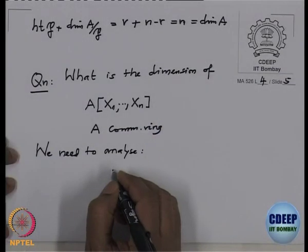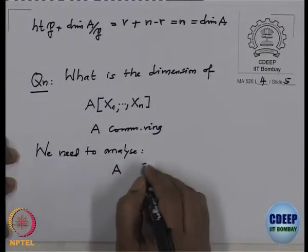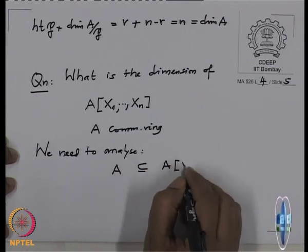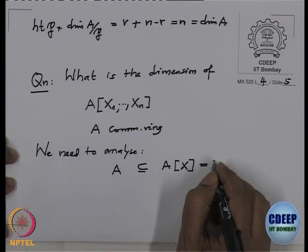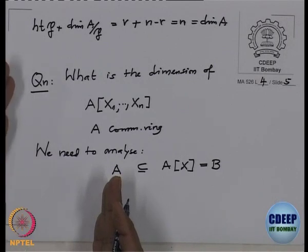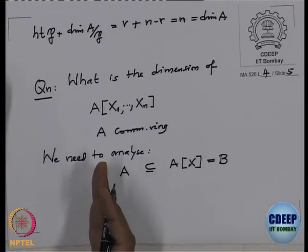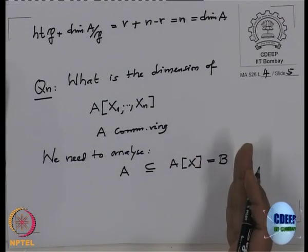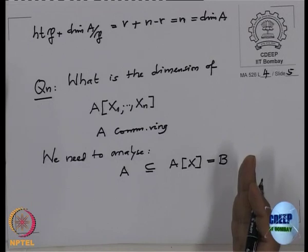We need to analyze the situation where A is contained in the polynomial ring B = A[X]. We cannot apply the normalization lemma or related techniques because we do not have a field, finite type K-algebra, transcendence degree, and so on. The question is: if you have a chain of prime ideals in A, how do you get a chain in the polynomial ring, and what is the difference between their lengths?